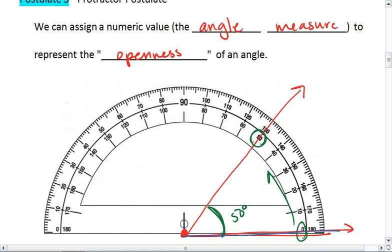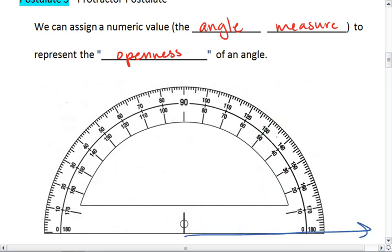I could draw another angle. We'll do this blue one. And we'll have it extend out to here. So starting at 0, I go along these bottom numbers, and I realize that this angle is 110 degrees.